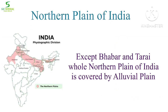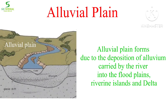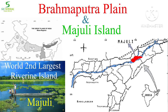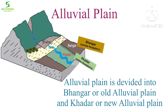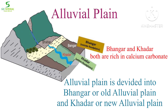The Alluvial Plain lies to the south of the Tarai belt. Except for the Bhabar and Tarai belts, the whole Northern Plain of India is covered by the Alluvial Plain. It forms due to deposition of alluvium carried by rivers into flood plains, riverine islands, and delta regions. The Brahmaputra Plain is known for the largest riverine island of Asia — Majuli. The largest delta of the world, the Sundarbans delta, is formed by deposition of the Ganga and Brahmaputra rivers. The Alluvial Plain is divided into two parts: Bhangar and Khadar.